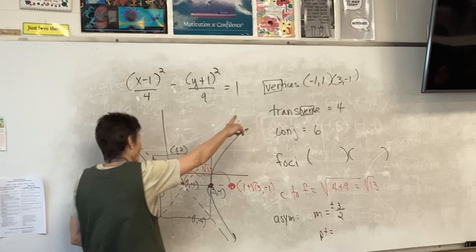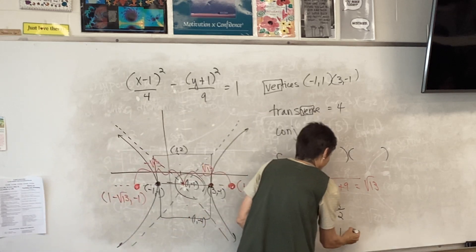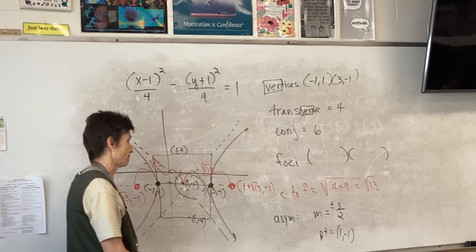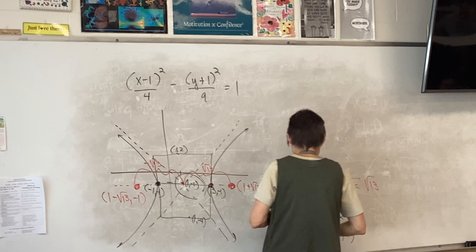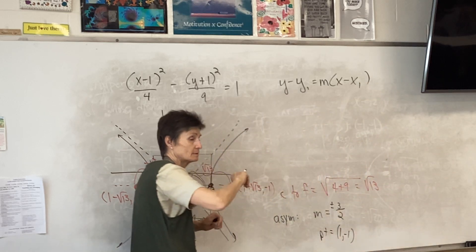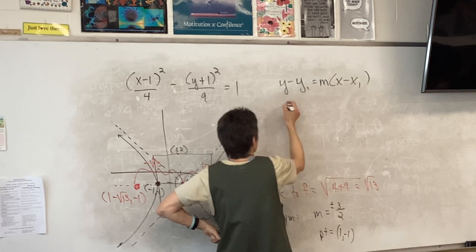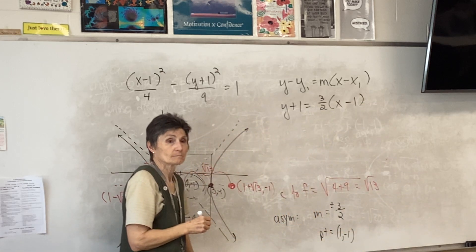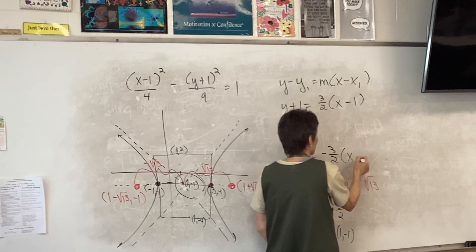What point shall I use to write the equations of these lines? The center — both asymptotes go through that point. I'm using point-slope format. Plugging in the positive slope first: y plus one equals three halves times x minus one. And the other one is y plus one equals negative three halves times x minus one.